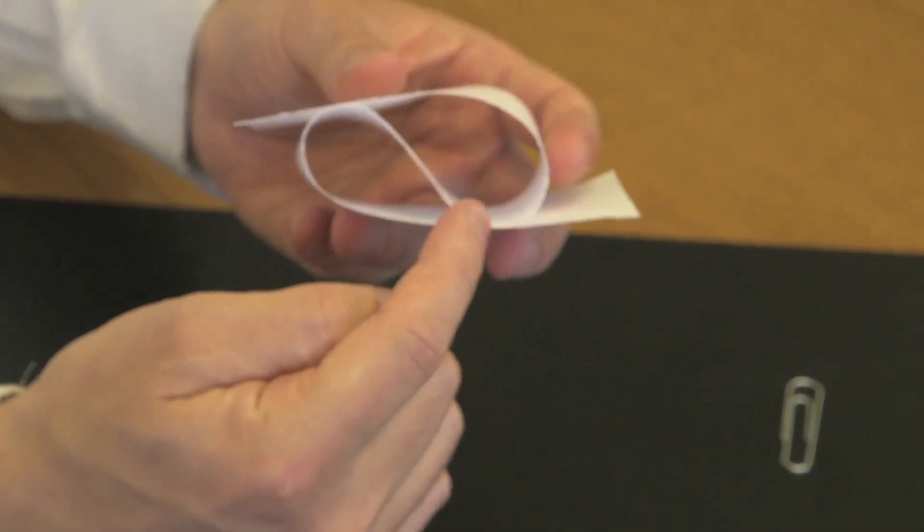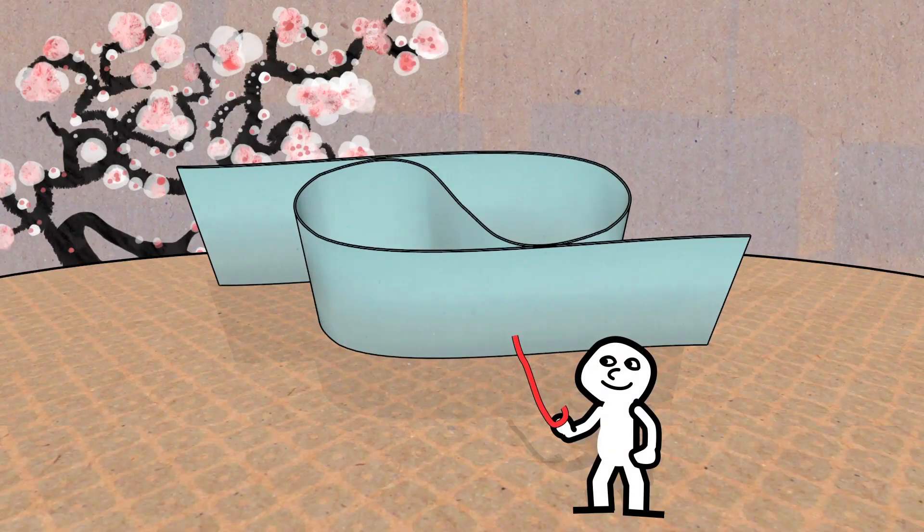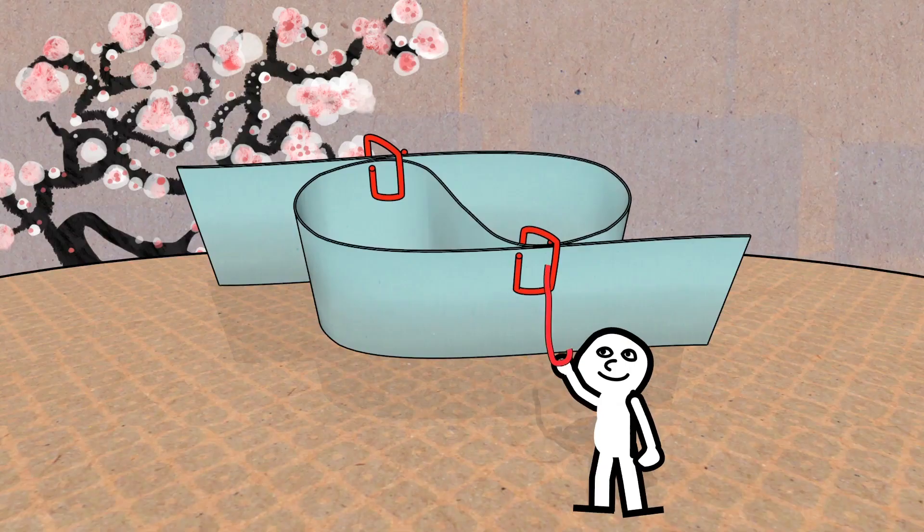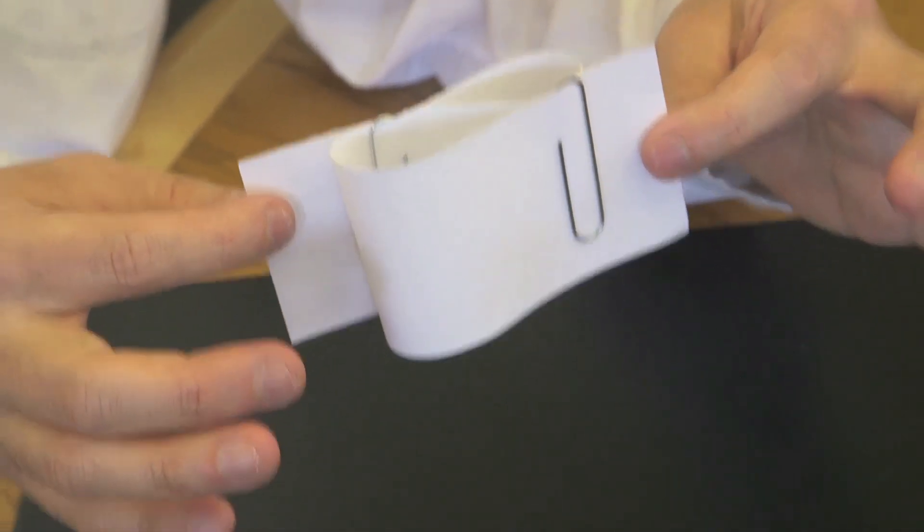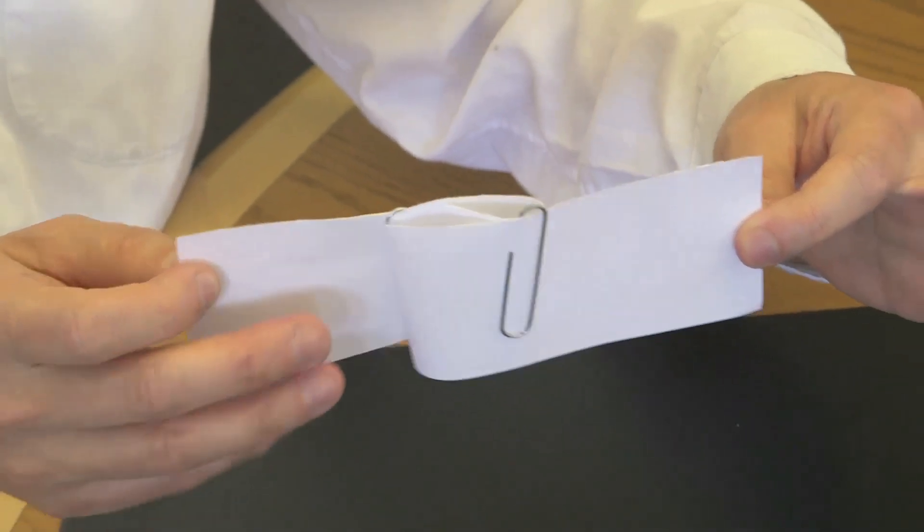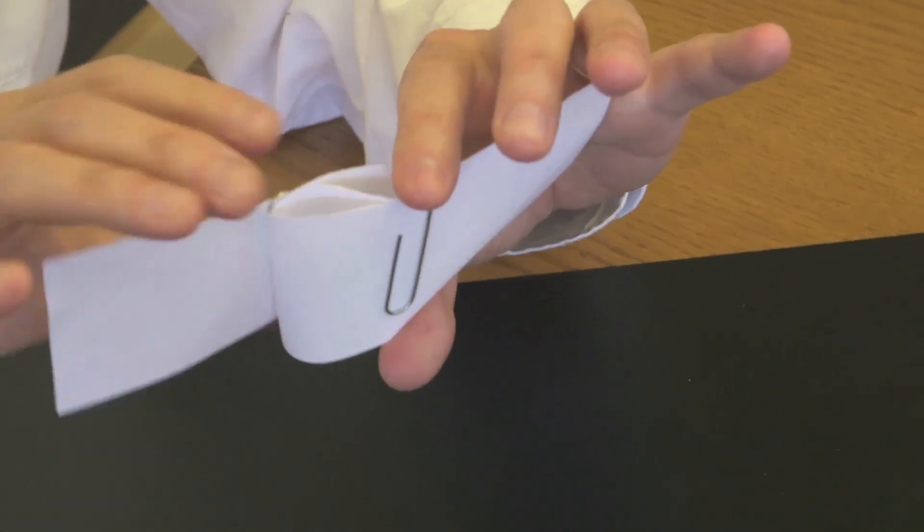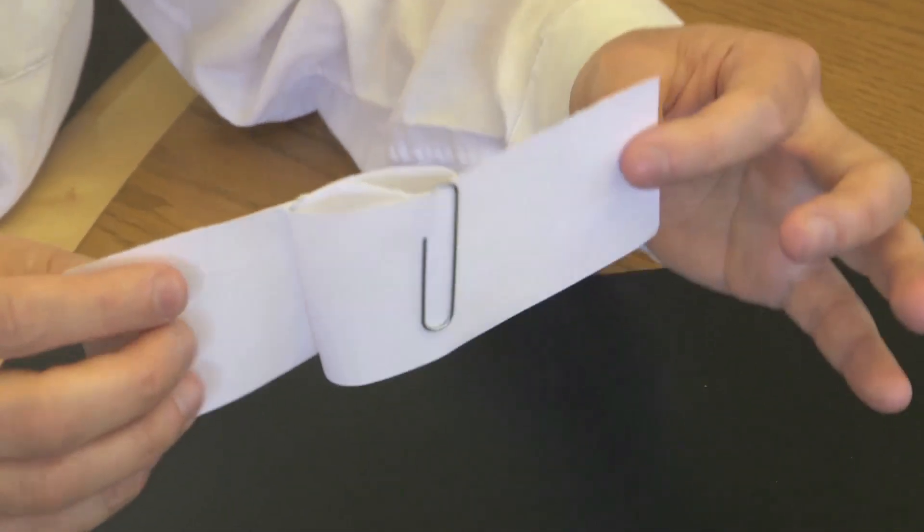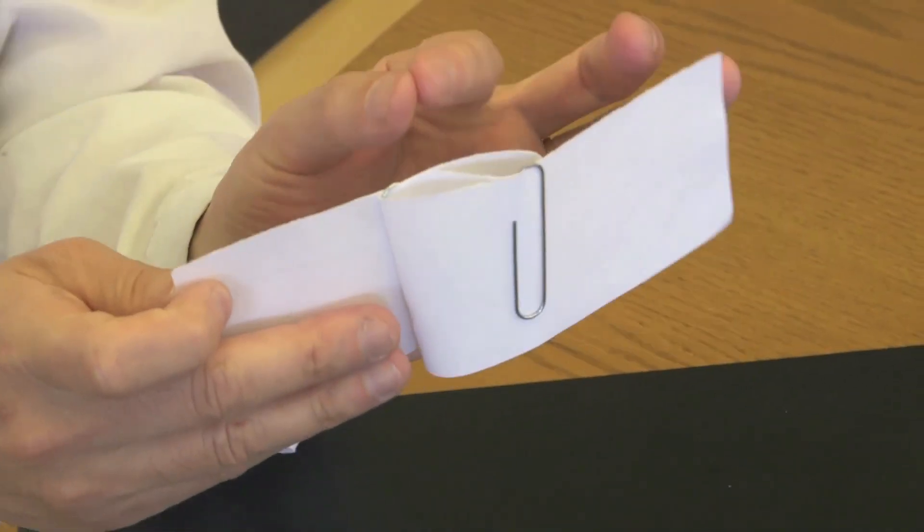And with the help of the paper clips, we shall fix that shape by slotting the paper clips here and here. Now, what happens if I start pulling the ends of the paper? Well, you can see that the paper clips come closer and closer together because they're being driven by the paper. So if I keep pulling, eventually they'll touch and jam.